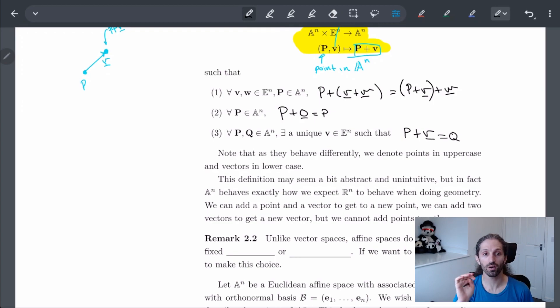So notice how, since they are different objects and they behave differently, we're going to try to always stick with points being capital letters without a bar and then lowercase letters for vectors with a little line when I'm writing it.